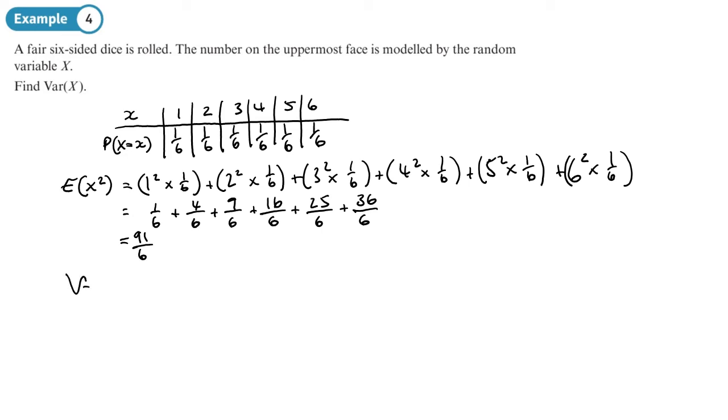So Var(X) is E of X squared which is ninety-one over six minus the mean squared. Now we know the mean, that's three point five squared. Do I need to do the working for it? I could, but I know that from symmetry so I can put by symmetry I have found the mean.